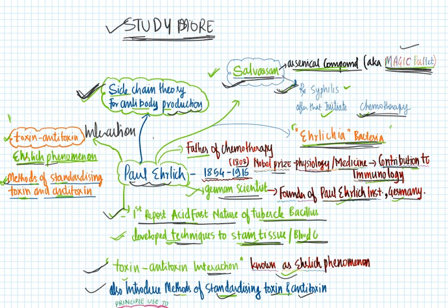He described the toxin and antitoxin interaction, which is known as the Ehrlich Phenomenon. He also introduced a method to standardize toxin and antitoxin. He was the first to report the acid-fast nature of tubercle bacilli.